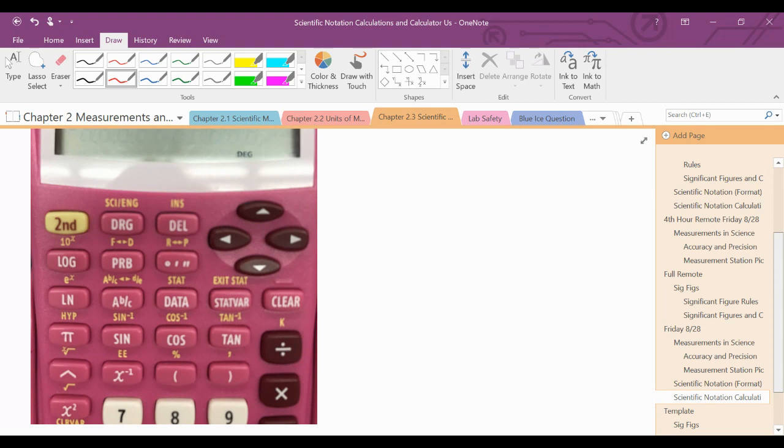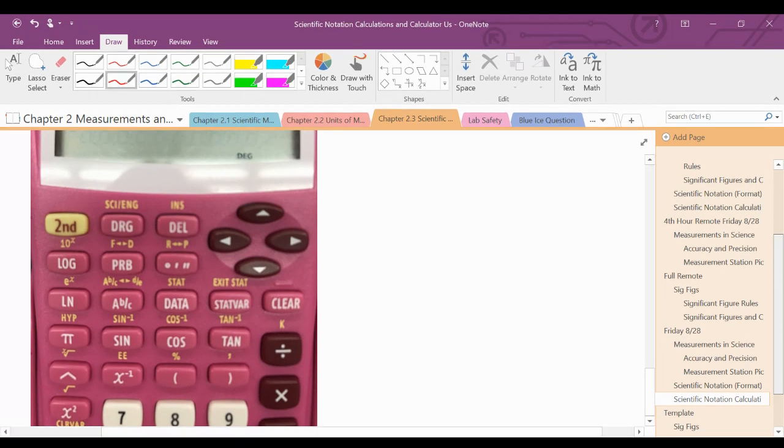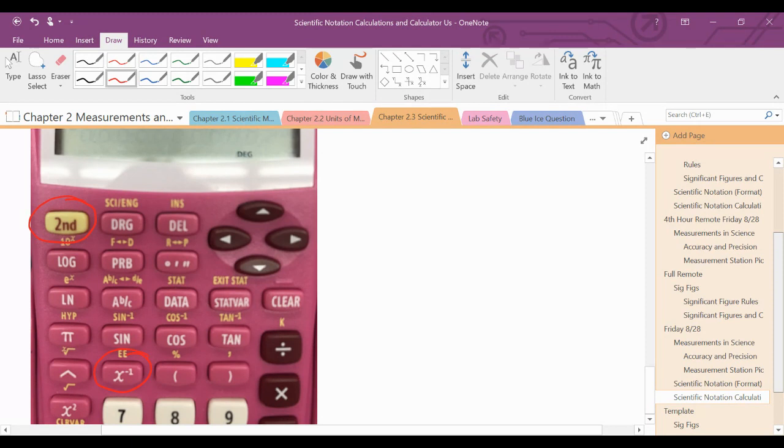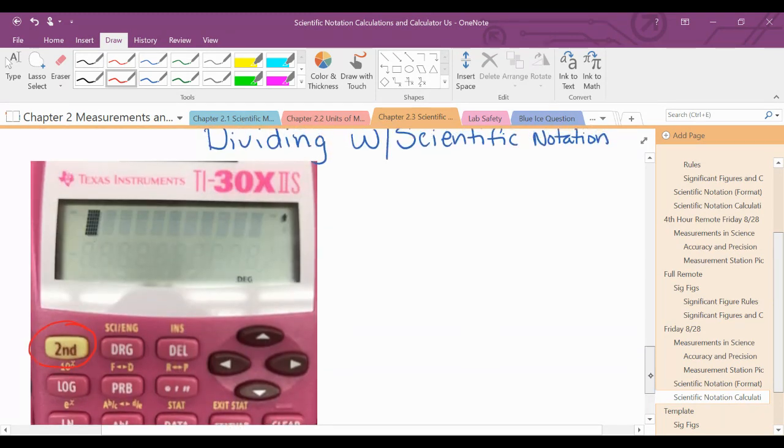So again, the buttons that you're really looking for to use scientific notation are the second button, and the EE, the X to the negative 1, that's above the 7. So the example problem I'm going to do,